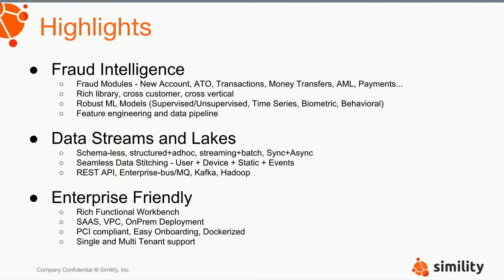REST APIs are the standard way of sending data to Simility. But we also work with banks where typically there's an enterprise bus, a Kafka queue, or an MQ instance — we'll pull data out of that instance and make sure we run our models and anomaly detection on top of that.